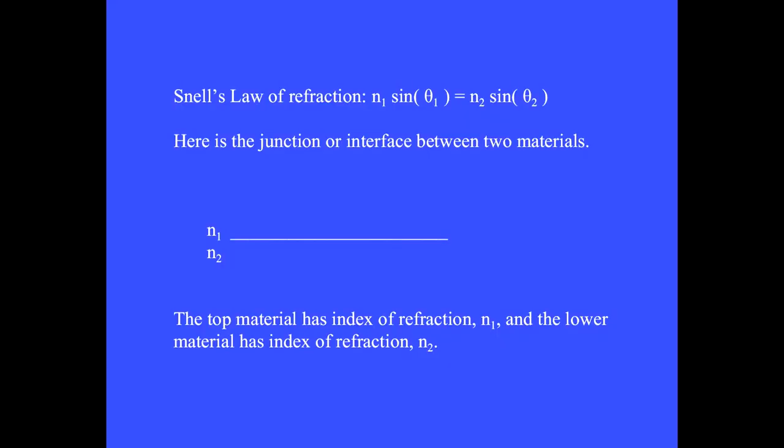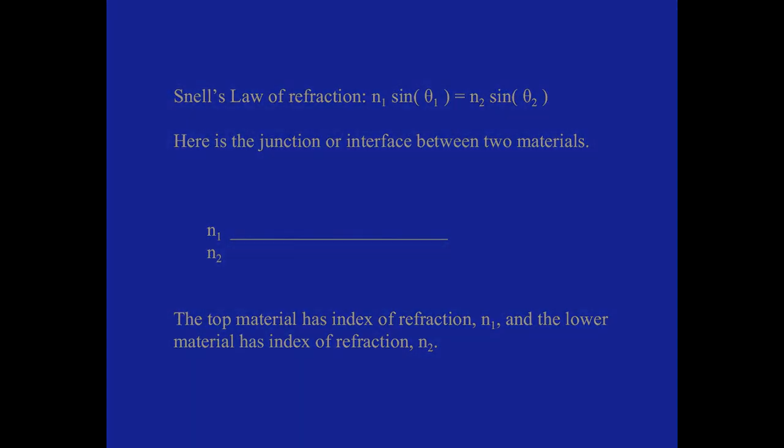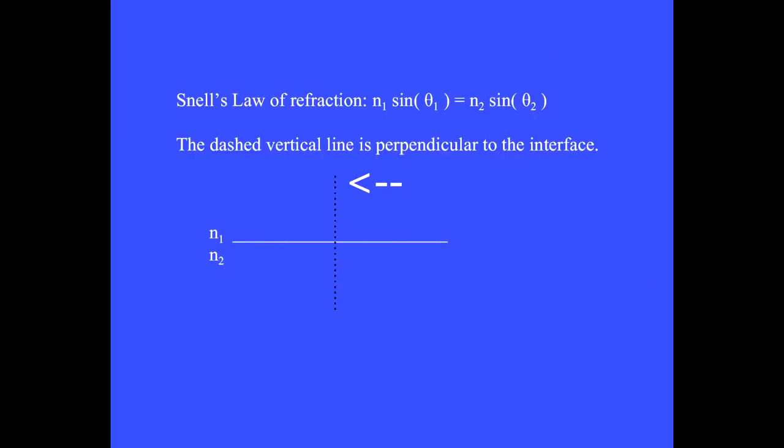Snell's law of refraction explains how this pivot occurs. Here is the junction or interface between two materials, N1 and N2. The top material has index of refraction N1 and the lower material has index of refraction N2. The dashed vertical line is perpendicular to the interface.